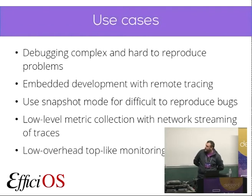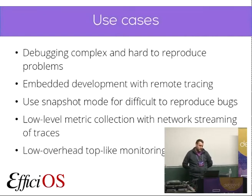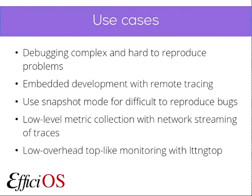Use cases for LTTNG: debugging complex and hard-to-reproduce problems that involve different parts of the system. When you have a slowdown that you cannot pinpoint to a specific subsystem or daemon, you can extract information directly from the kernel and analyze it to pinpoint latencies. It's also used a lot in embedded development with what we call remote tracing — you can stream your traces over the network, so on a system that doesn't have local storage the traces can be streamed over the network to a remote host.